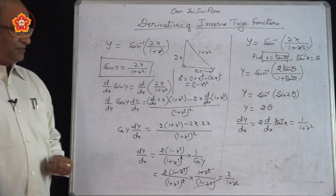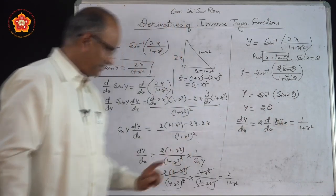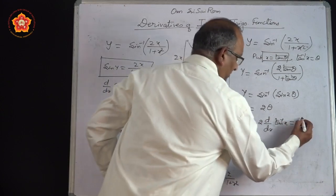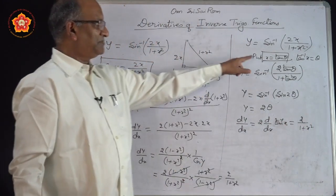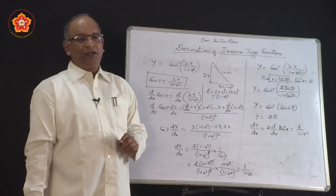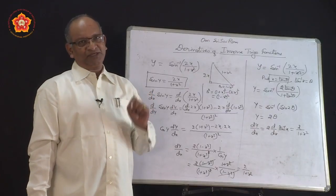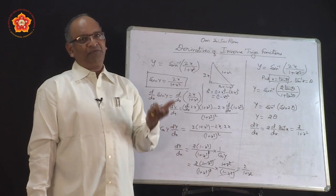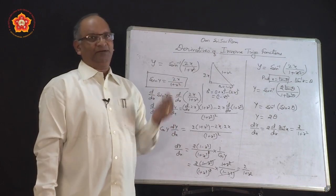We get the answer 2/(1+x²) by making this simple substitution x = tan θ. The inverse trigonometric function problems are very, very simple if you can think of an appropriate substitution.